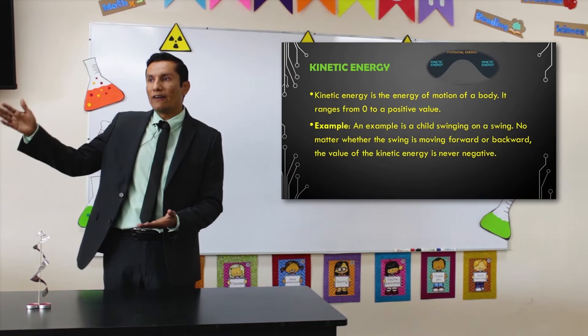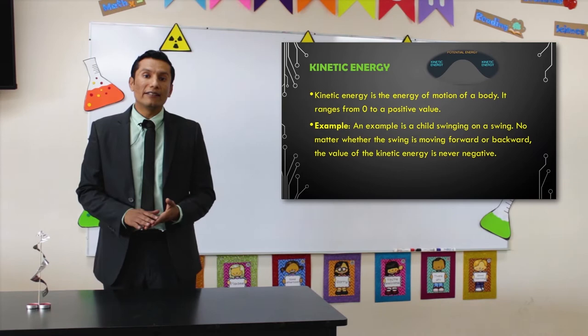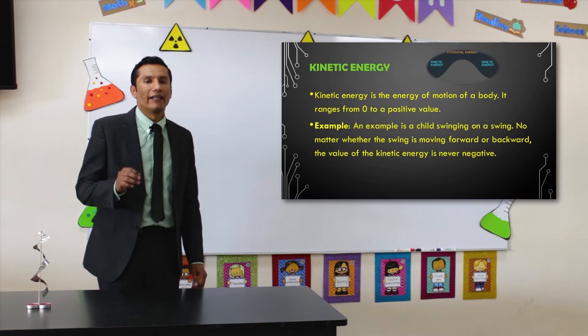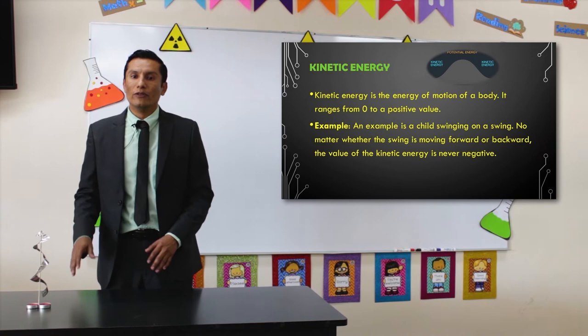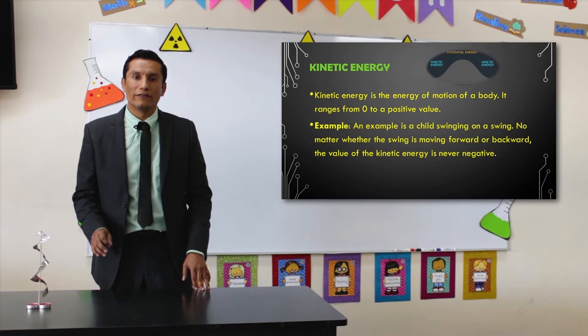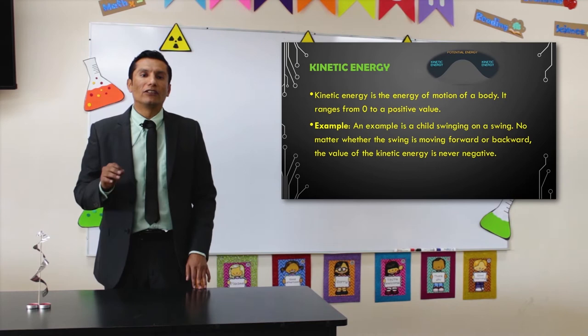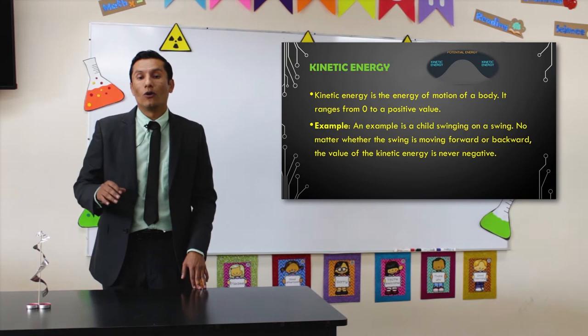Kinetic energy doesn't exist until something starts moving. An example of kinetic energy is a child swinging on a swing. No matter whether the swing is moving forward or backward, the value of kinetic energy is never negative. As long as the child is swinging, the kinetic energy is not equal to zero — it is always a positive value.